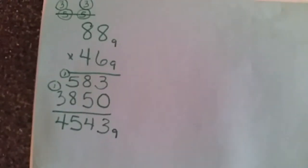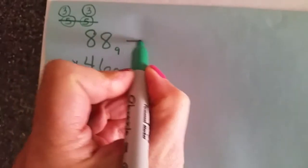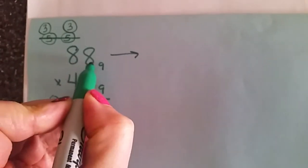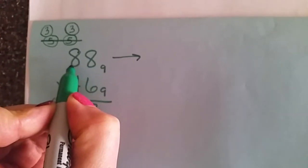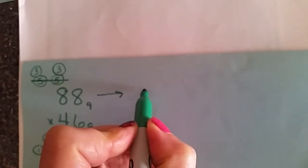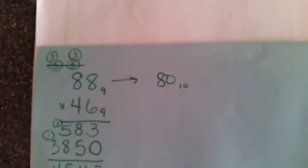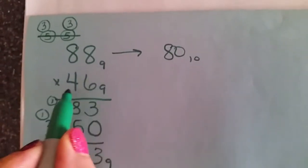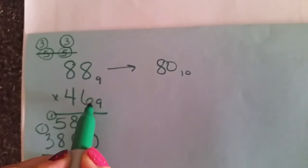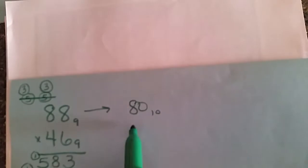So now if we want to check this, we can translate to base 10. If I was going to translate this top number, we've got a 1's place and a 9's place. So that's 8 groups of 9, which is 72, plus 8. So 72 plus 8 would be 80 base 10. 46 base 9 would be 4 groups of 9, which would be 36, plus 6 leftovers, which would be 42.